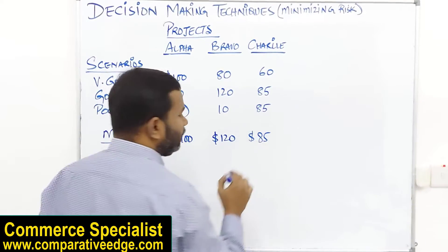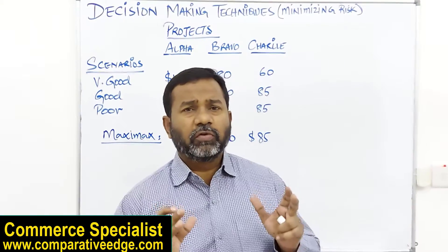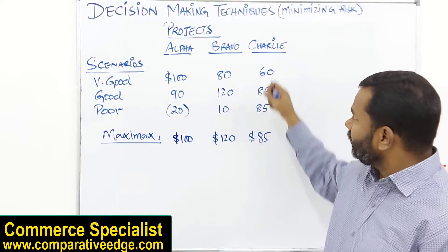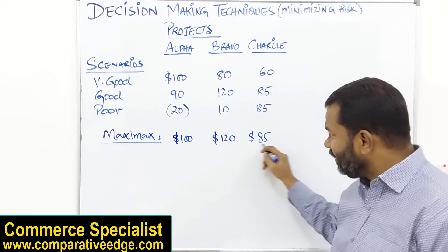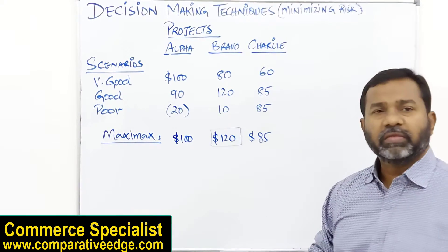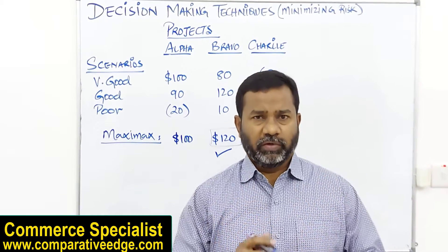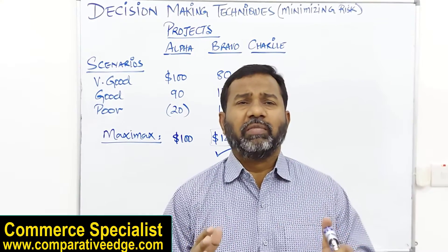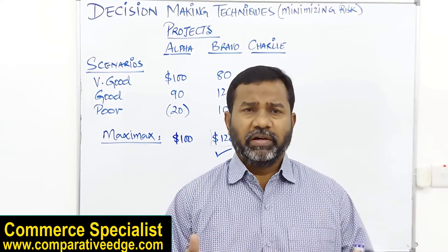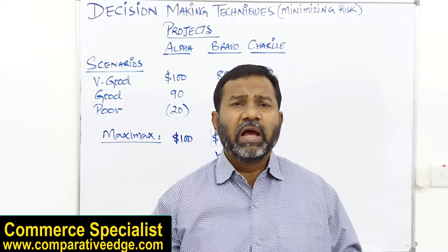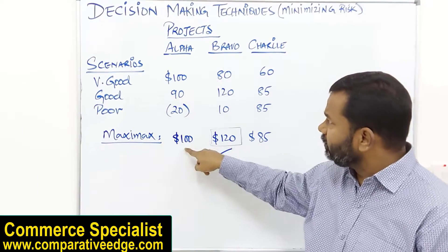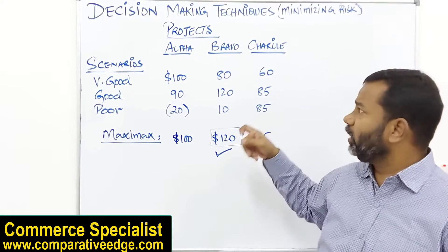For Charlie, the maximum is $85. Under the MaxiMax decision rule, I take the maximum for Alpha, the maximum for Bravo, and the maximum for Charlie, then choose the highest return among these three, which is Bravo at $120. Here I am looking only at the maximum return and not at the amount of risk I'll be exposed to. These managers have the appetite for risk — they are risk takers willing to take risk as long as they get the maximum return.